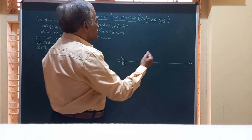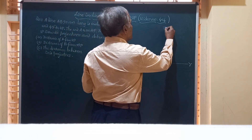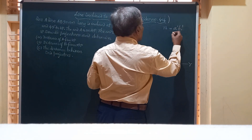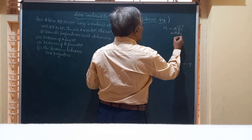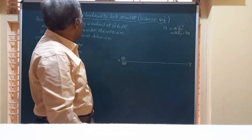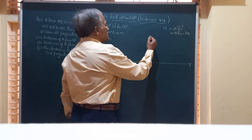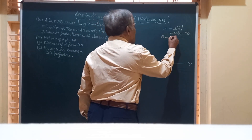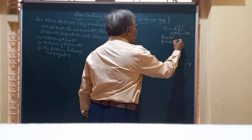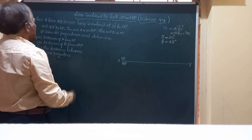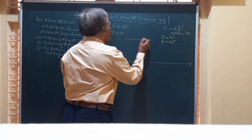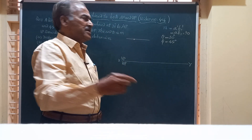In this question, the true length of the line is given. True length (TL) is represented by A'B1' which is also equal to AB1, and that is given as 90 mm. The inclination theta with HP is 30 degrees, and the angle phi made by the line with VP is 45 degrees. Additionally, end A is on HP.